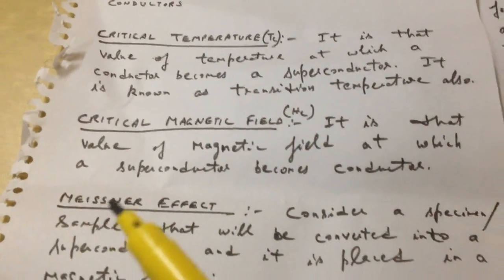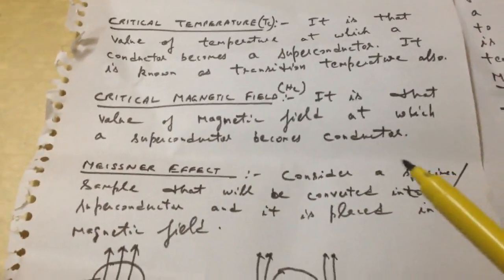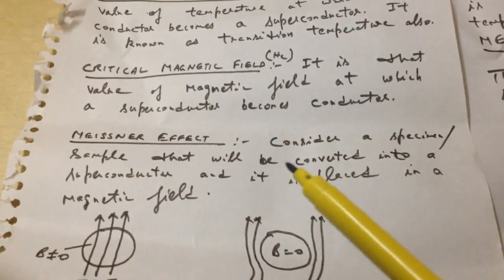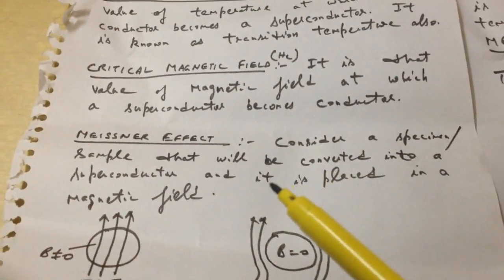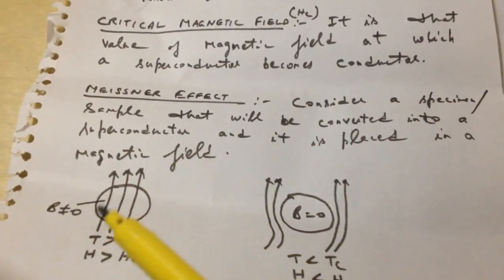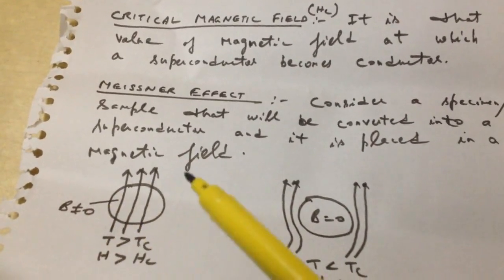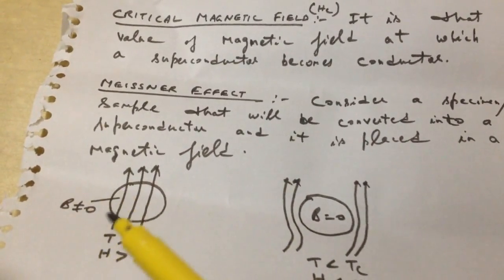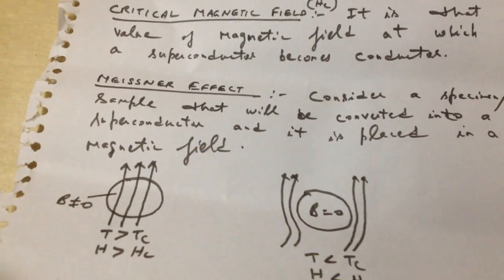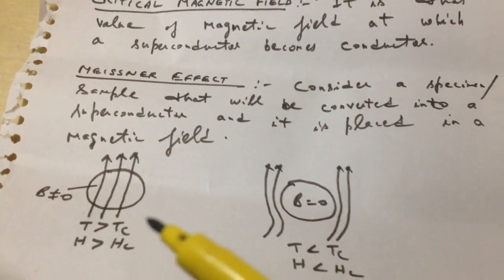Consider a specimen or sample that we want to convert into a superconductor. This specimen is placed in a magnetic field. Here is the specimen, placed in the magnetic field, and these are the magnetic lines of force. The temperature is more than the critical temperature and the magnetic field is more than the critical magnetic field.